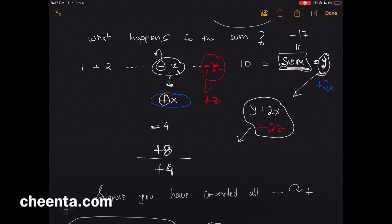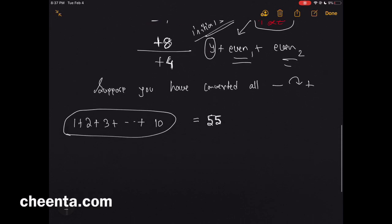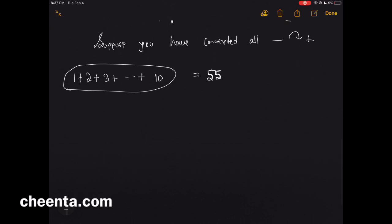This operation that we did here—at every step you added something even to the initial sum. So the initial sum, then you add some even number 2x and some other even number 2z. To the initial sum, every time you added some or other even number. So we are in the last step of the problem.